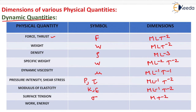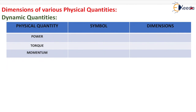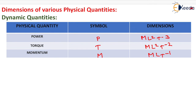Work and energy, symbol W or E, dimension ML²T⁻². Power, symbol P, dimension ML²T⁻³. Torque, symbol T, dimension ML²T⁻². Momentum, symbol M, dimension MLT⁻¹.